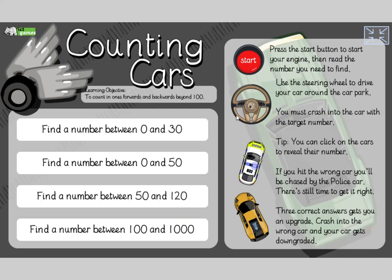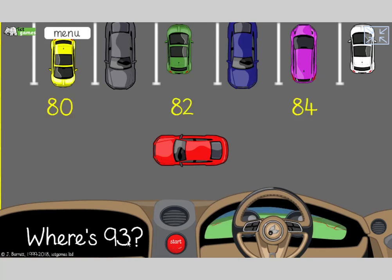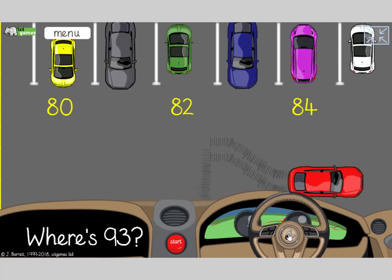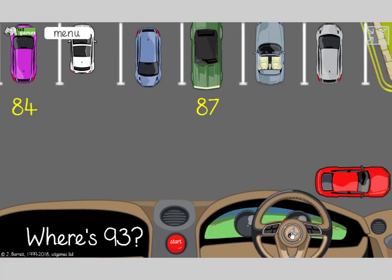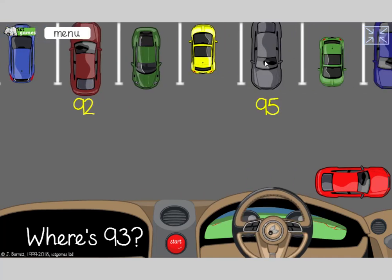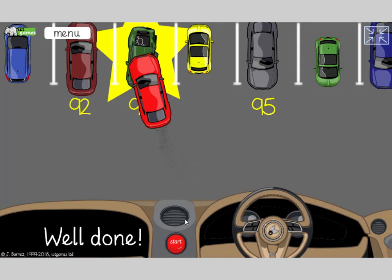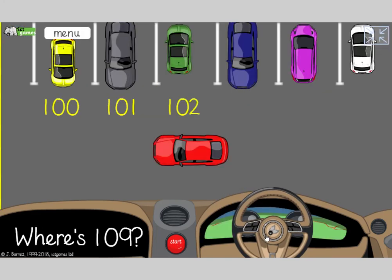I'm going to start with Counting Cars. This is a game where you're driving a car and you have to crash into the car that you're looking for in the car park. So we're going to do numbers between 50 and 120. I have to start the engine and I'm looking for where's 93. I'm driving the car, here we go. Where's 93 going to be? There's 87, there's 92, where's 93 going to be? There's 95.